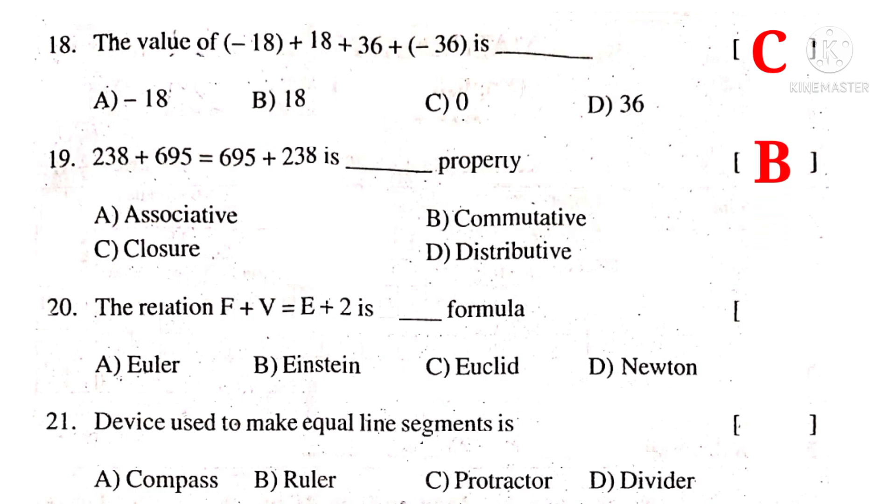The relation F plus V is equal to E plus 2 is dash formula. F indicates number of faces, V vertices, E edges. So this is true for all 3D objects. It is Euler's formula. So the correct choice is A.